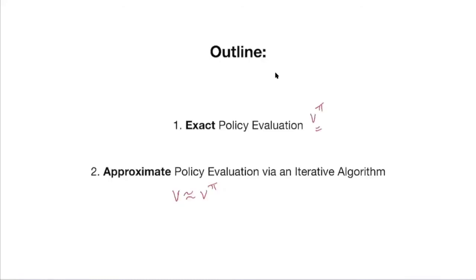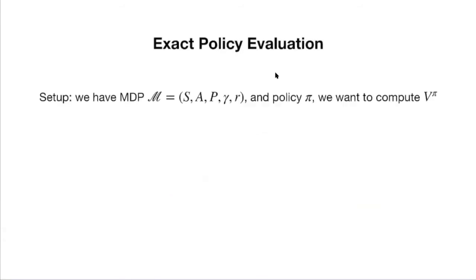Before jumping into the details, let me pause for questions. For the second algorithm, we're going to use the property of the Bellman equation — the properties learned in the first week will be used to design algorithms. In Thursday's lecture, we'll see how Bellman optimality is used to design algorithms to find the optimal policy. The setup: an infinite horizon discounted MDP and a particular policy pi, and we want to compute the value function for that policy.